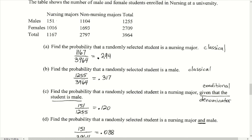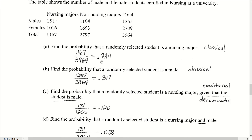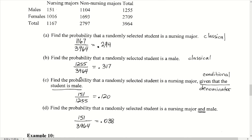In part B we're asked: what is the probability that the randomly selected student is a male? We take the total number of males — that's this row total of 1,255 — and divide by the total number of individuals, 3,964, which gives us a probability of 0.317.